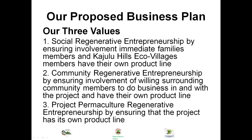We have young children and young people participating. We have a business plan with three dimensions: social regenerative entrepreneurship, promoting a transition from passion-preneurship to regenerative ecopreneurship. We have three lines — social regenerative entrepreneurship ensuring involvement of immediate families, community product lines, and social entrepreneurship — and we want those three lines to be totally independent and sustain themselves without interfering with one another, creating resilience and sustainability.